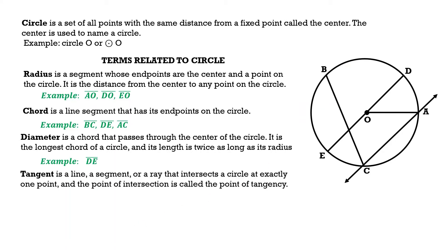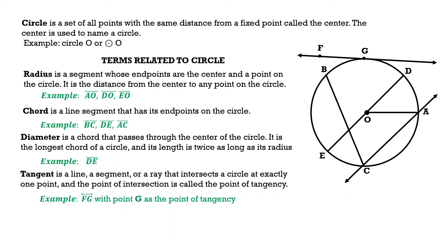Next, we have the tangent. A tangent is a line, segment, or ray that intersects a circle at exactly one point, and that point of intersection is called the point of tangency. For example, we have line FG, where point G is the point of tangency — the point of intersection between the circle and the line.